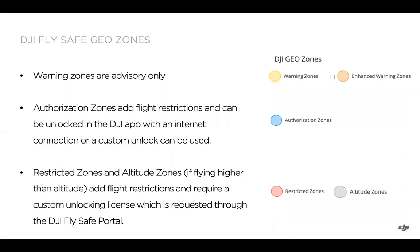These different colors are directly related to a type of GeoZone. Warning zones are advisory only — those would be yellow and orange. The blue is an authorization zone that does add flight restrictions, and it can be unlocked within the DJI app using an internet connection, or a custom unlock from the FlySafe portal can be used. The red restricted zones and the gray-black altitude zones also add flight restrictions and require a custom unlocking license, which is requested through the FlySafe portal. For altitude zones, you would only need an unlock if you're going to be flying higher than the altitude zone limit.